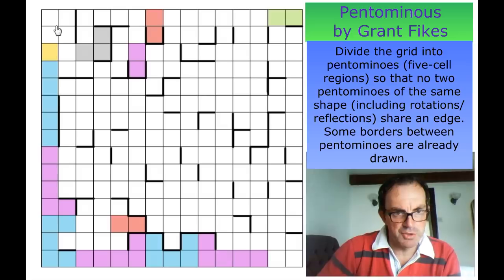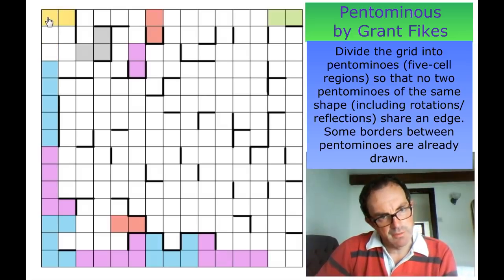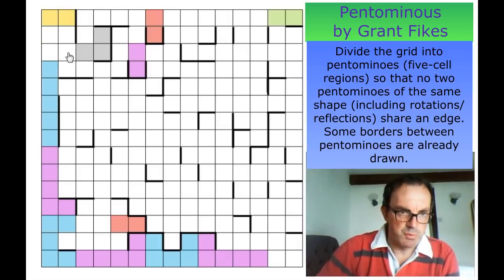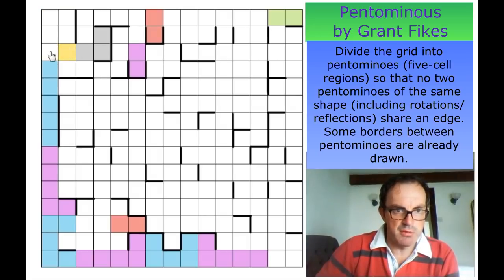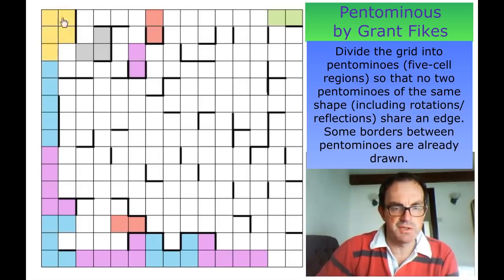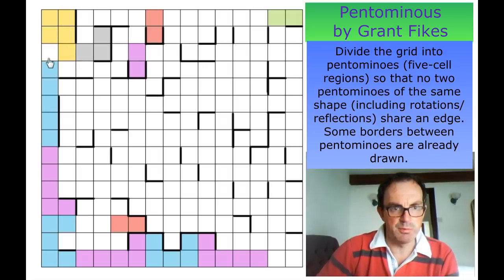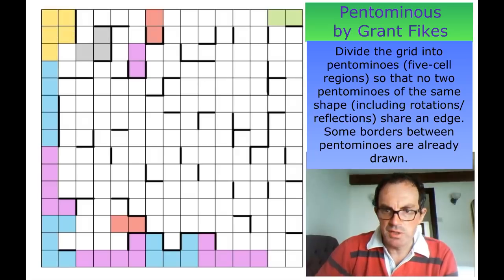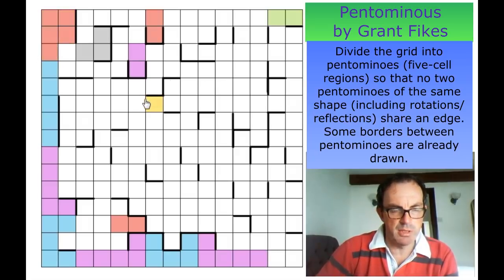This has to be a P pentomino, doesn't it? There's just one exit from this region — this cell is the only exit from these five squares. So it's not possible for there to be two pentominoes in this top region, because there would have to be two exits and there isn't. We can't have the P pentomino that way round because that would isolate this square, so this has to be a P pentomino like this.